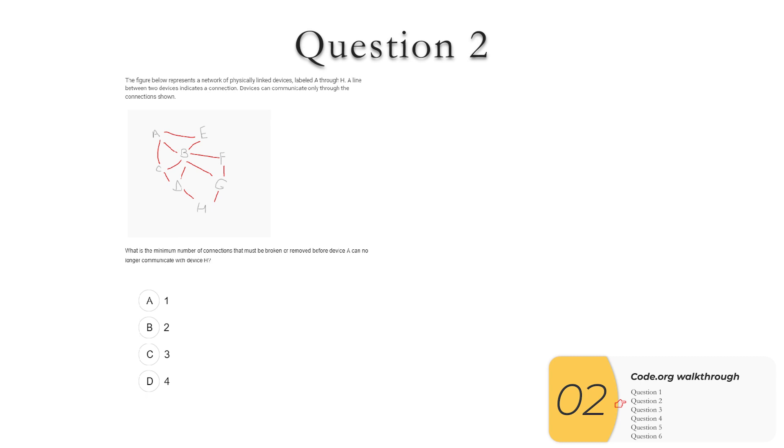Alright, question two. You have a computer network here, and you got to see what's the minimum number of connections that you can break or remove before A can't communicate with H. So this is a super common type of problem, at least from everything that I've seen. You want to be pretty familiar with these before you go in. The trick here is you're looking to connect A and H. You can be sure this won't work if you cut off all of A, so that would be three connections. A is also not going to be able to communicate with H if you cut off all of H, so that's two connections. Then to be sure, you need to look for any single points of failure between A and H, but in this case, it's not there. So the answer here is B, two.